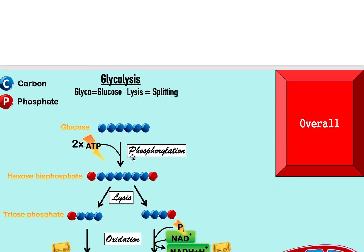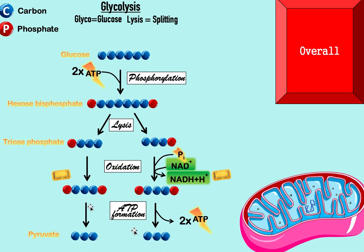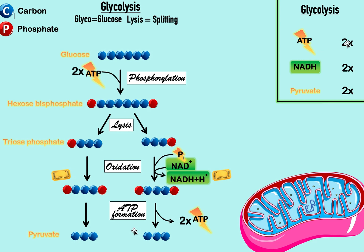In glycolysis, we take glucose and convert it into two pyruvates along with some other side byproducts. Overall in glycolysis we made very little ATP — only two — so obviously that's not good enough. We want a lot more ATP, and that's going to happen in the next stages. This glucose got split in half into two pyruvates.